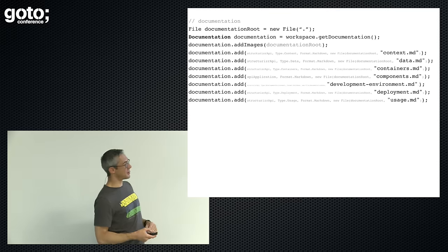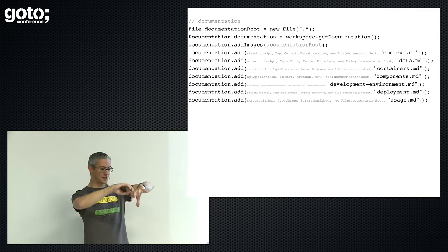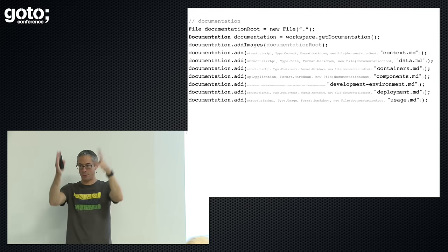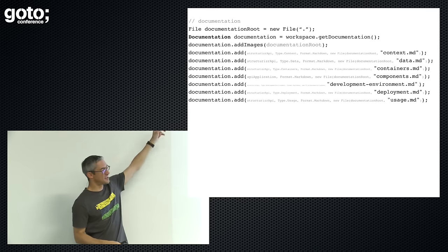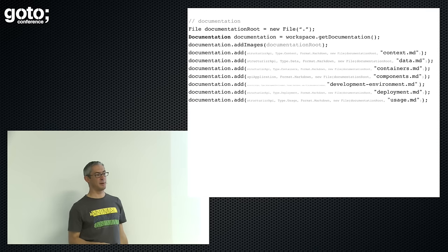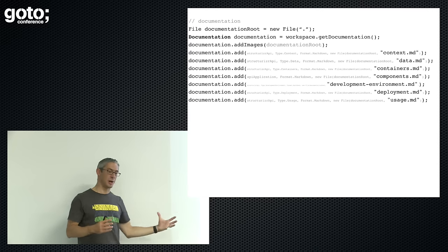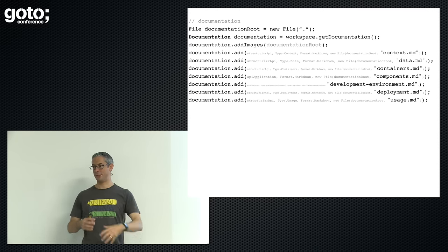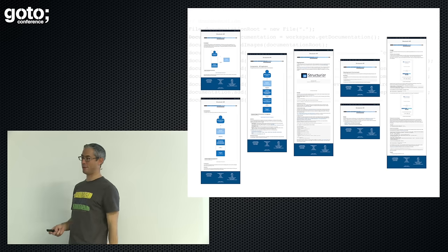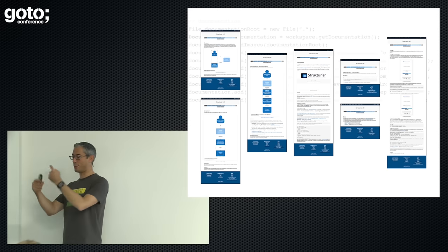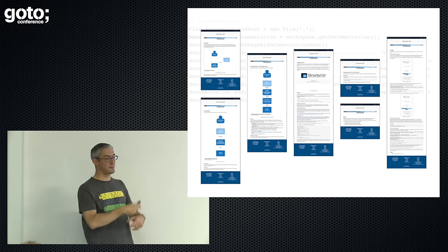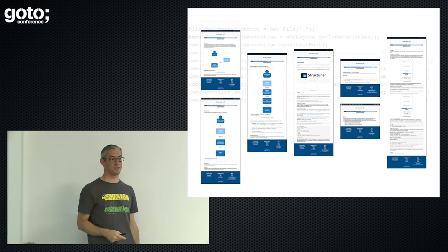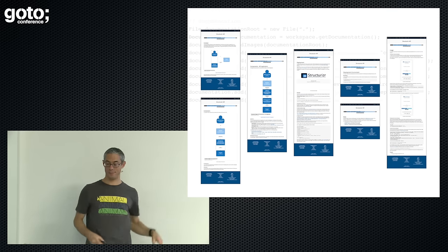That's something I'm trying to do with Structurizer — create a software architecture model that contains both the model and the visualization stuff, and the documentation. This is the code I wrote to document my little API application. It's a bunch of simple Markdown files. You upload them as part of the model and some documentation is basically generated for you. I'm trying to keep all of this stuff in one place. You can also embed diagrams in your documentation, so these things are together where they belong.